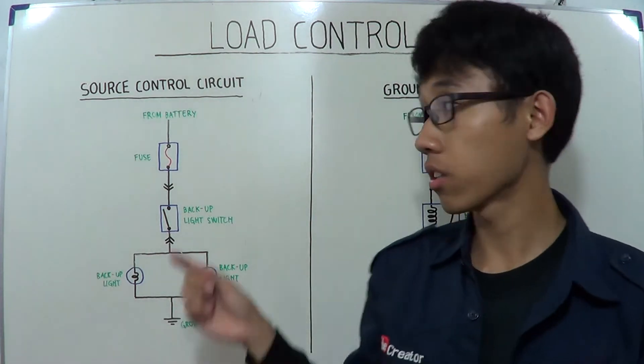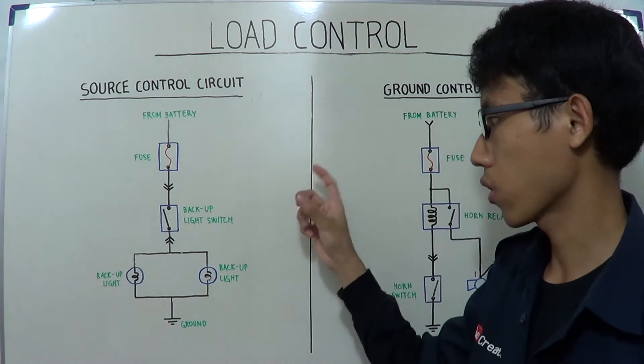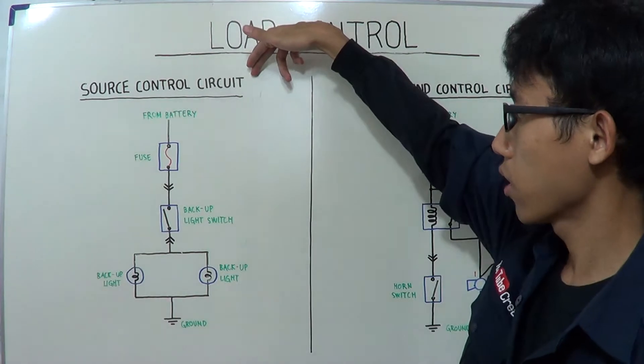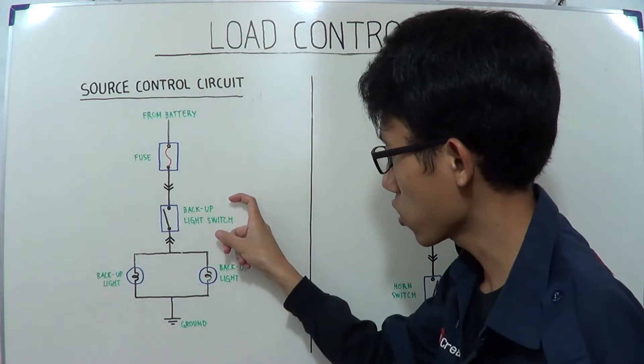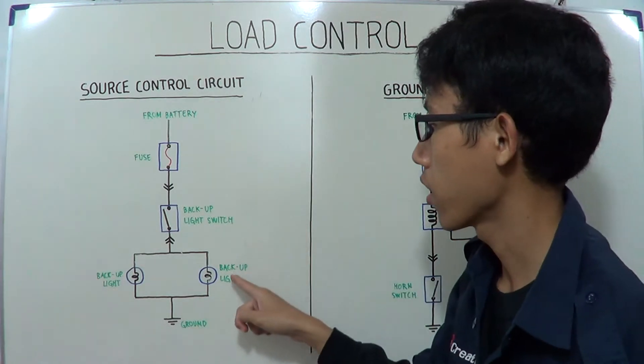The difference between the source control circuit and ground control circuit is just the location of the switch. The source control circuit, the switch is located between the voltage source and the load.